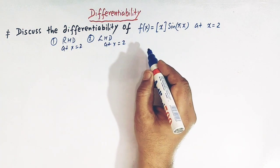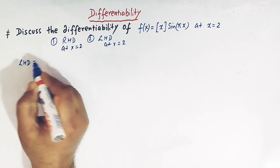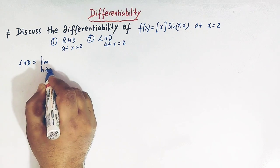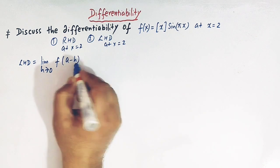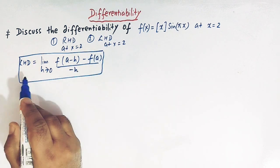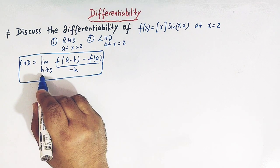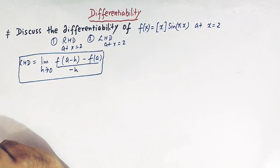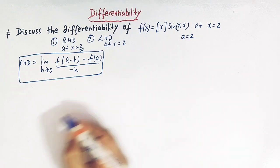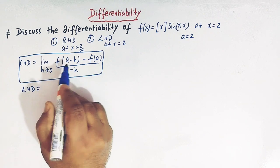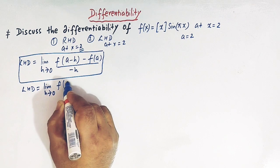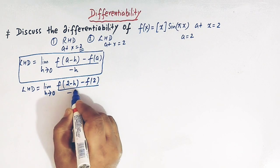Let us first find out the left-hand derivative. The definition of left-hand derivative is given by: limit h→0 of [f(a−h) − f(a)] / (−h), where h is a positive quantity greater than 0. Here the point a is 2, so substituting a = 2, we get limit h→0 of [f(2−h) − f(2)] / (−h).